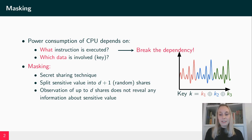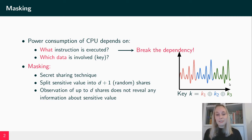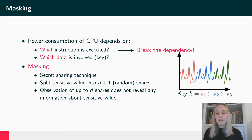Here is one example. This could be the attacker observing the power consumption of a masked AES implementation where we have split our key into three parts k1, k2, and k3. Then the power consumption at each point in time will only depend on one part of the key, but never on the unshared key itself.